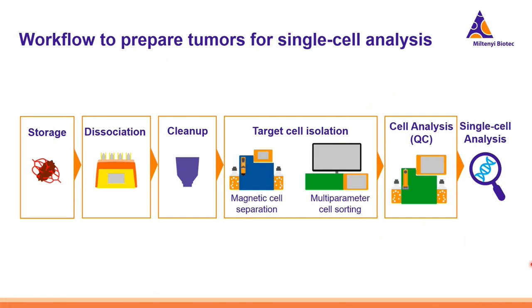We have put together a workflow series to prepare and optimize the preparation of tumors for single cell analysis. These workflow solutions start from the storage of tumors, moving to the dissociation and the proper cleanup of the tumors and suspensions. We also cover the isolation of particular cell types by using either magnetic cell isolation or multiparameter sorting. And last but not least, it's very important to apply a QC analysis of the samples before we apply them for single cell analysis.